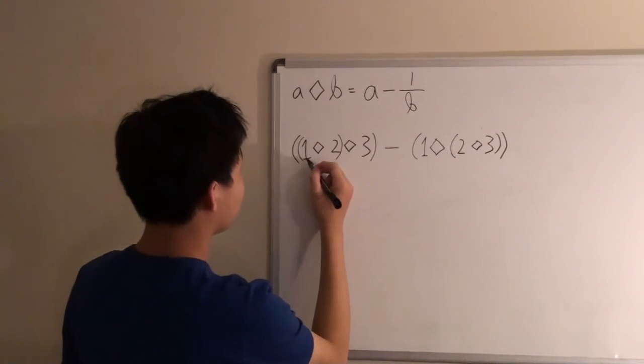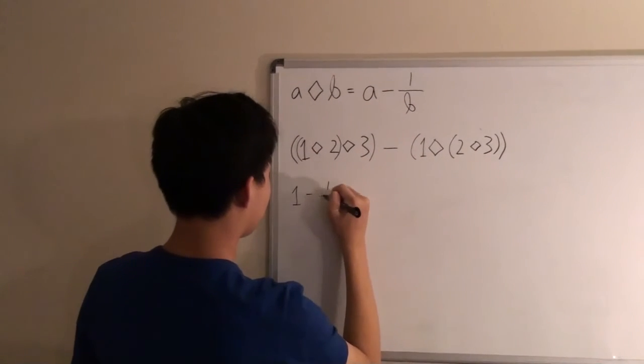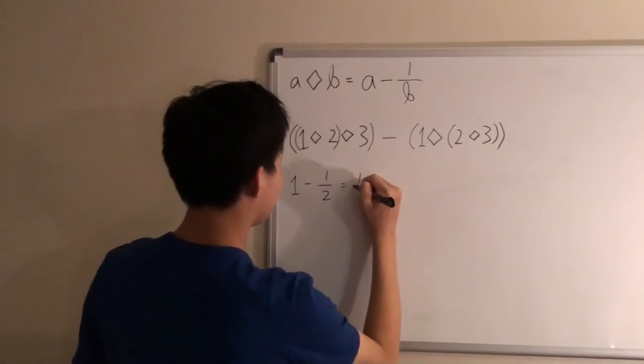So, 1 diamond 2, that would be 1 minus 1 over 2, equals 1 half.